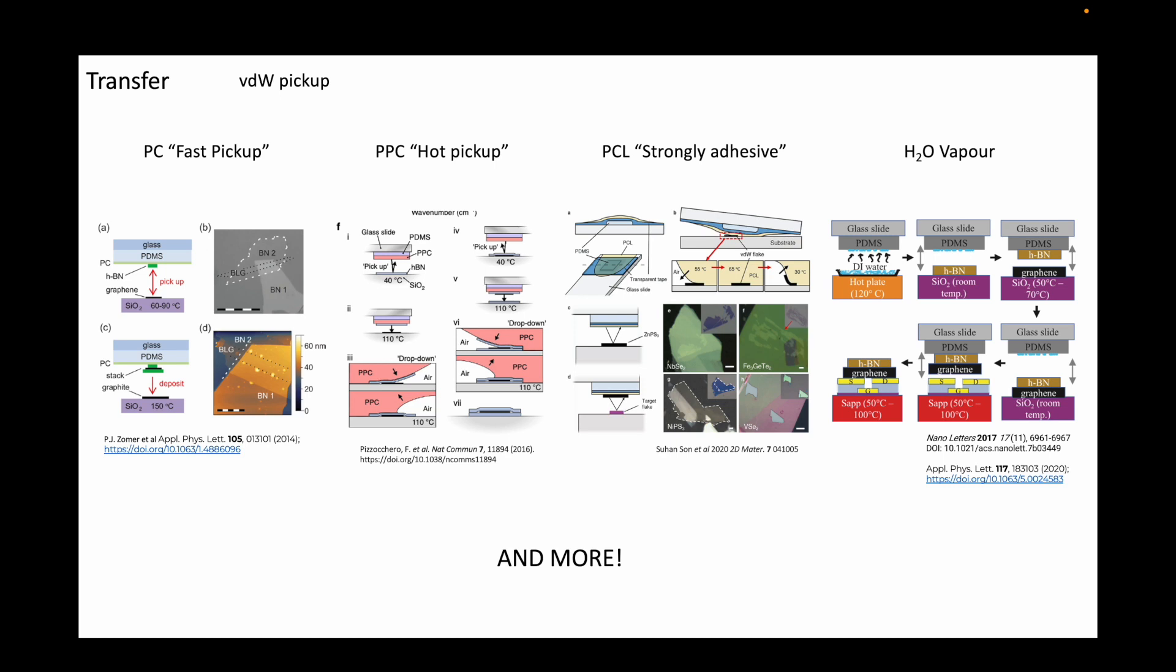For example, the first three methods can be used in a glove box with controlled atmosphere, while this method cannot, but if you're strictly working with HBN and graphene or any other air-stable 2D materials, then you don't really need to work in a glove box anyways. At the end of this talk, I will briefly highlight my opinion with regards to these polymers.